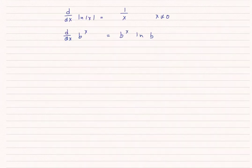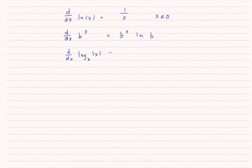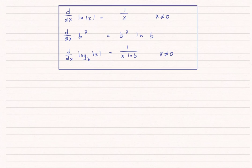To summarize, we've derived three important log and exponential derivatives: the derivative of natural log of the absolute value of x is 1 over x, for x not equal to zero; the derivative of b to the x is b to the x times natural log of b; and the derivative of log base b of the absolute value of x is 1 over x times natural log of b, for x not equal to zero.